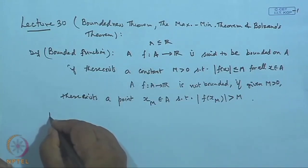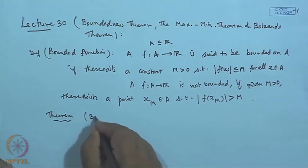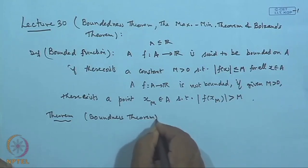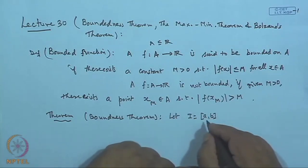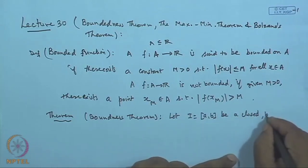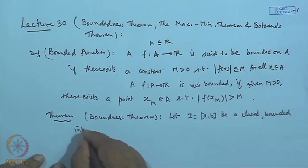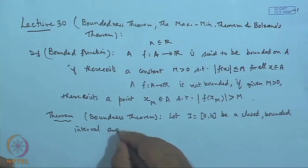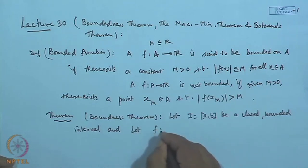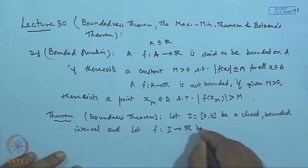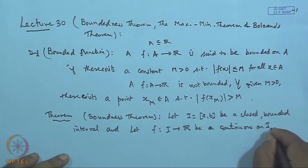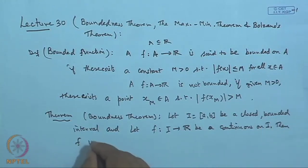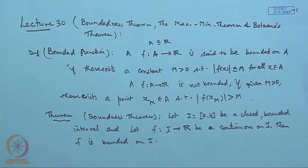Now the theorem known as the Boundedness Theorem states: Let I be a closed bounded interval and let f be a function from I to R that is continuous on I. Then f is bounded on I. So every continuous function on a closed bounded interval will be a bounded function.